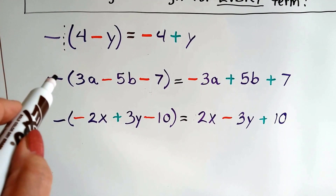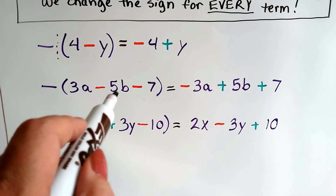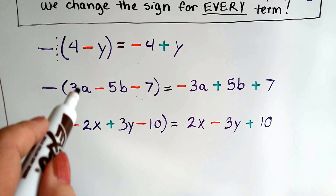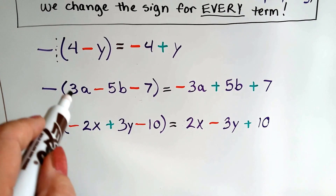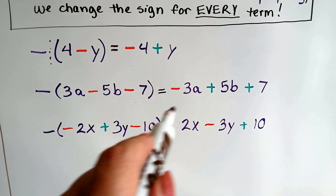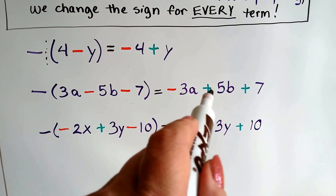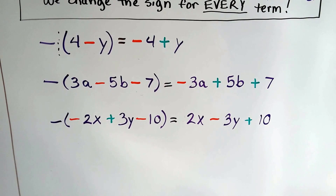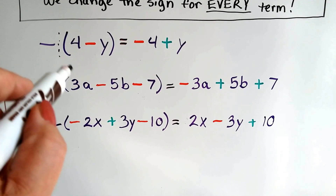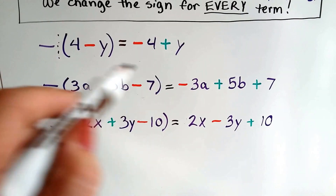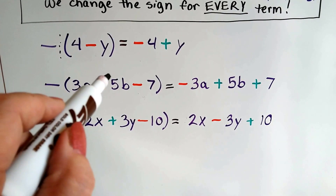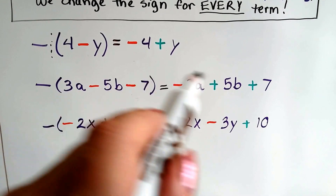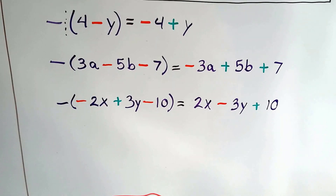Let's try this one. We have a minus sign on the outside, then 3a minus 5b minus 7. We're going to change all the signs. Positive 3a becomes negative 3a. Negative 5b becomes positive 5b. Negative 7 becomes positive 7. Negative 1 times positive 3a is negative 3a; negative 1 times negative 5b is positive — two negatives; and negative 1 times negative 7 gives us positive 7. We just changed all the signs.